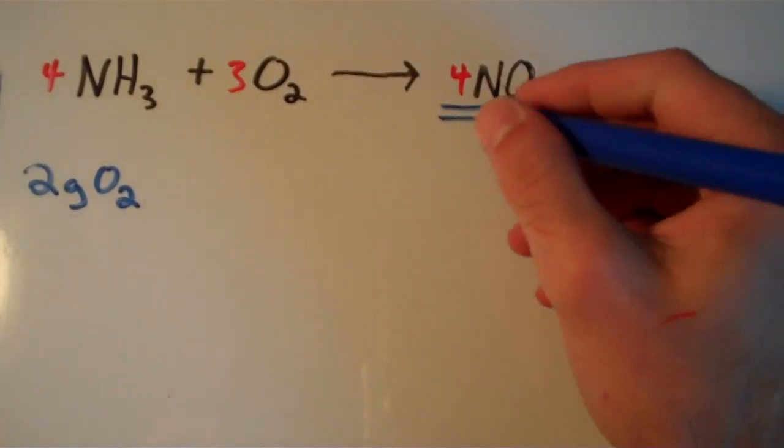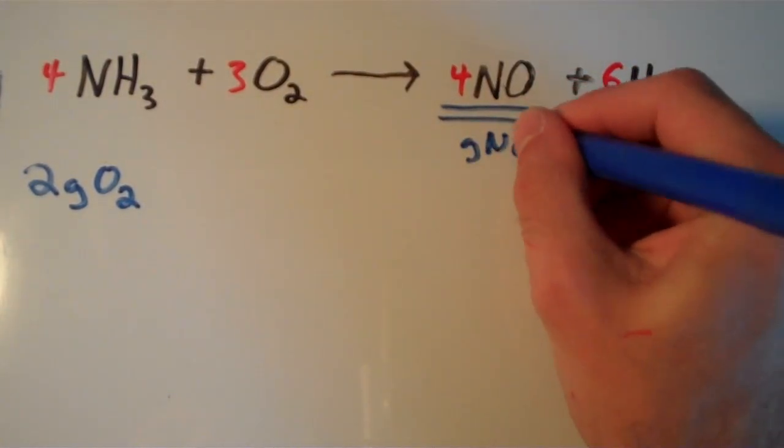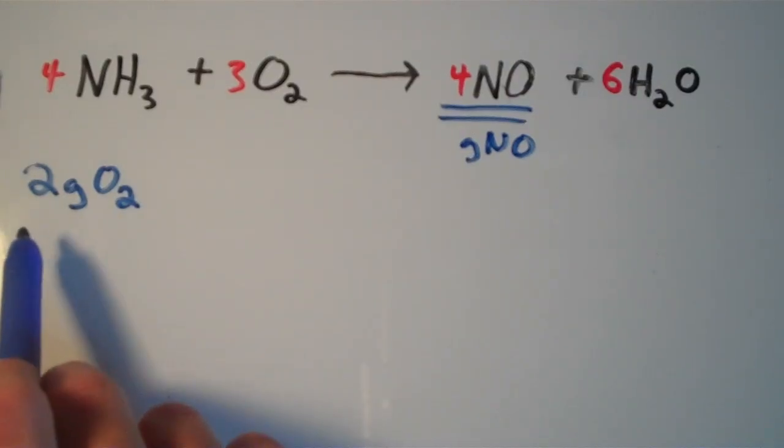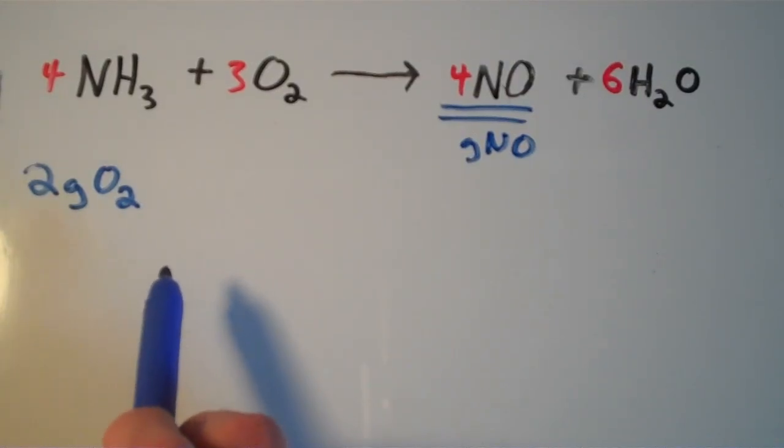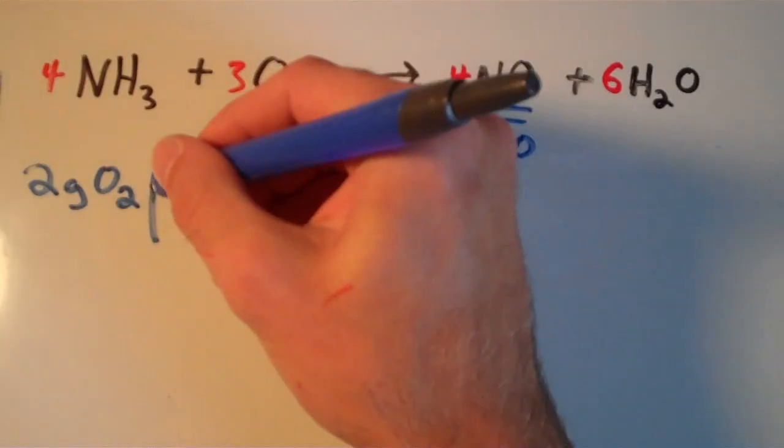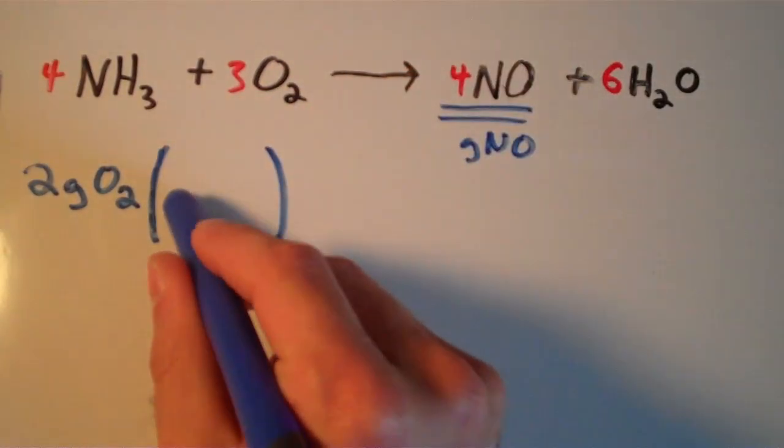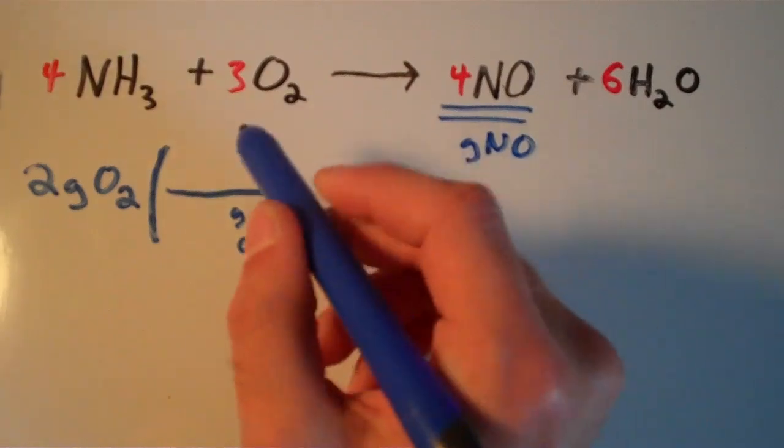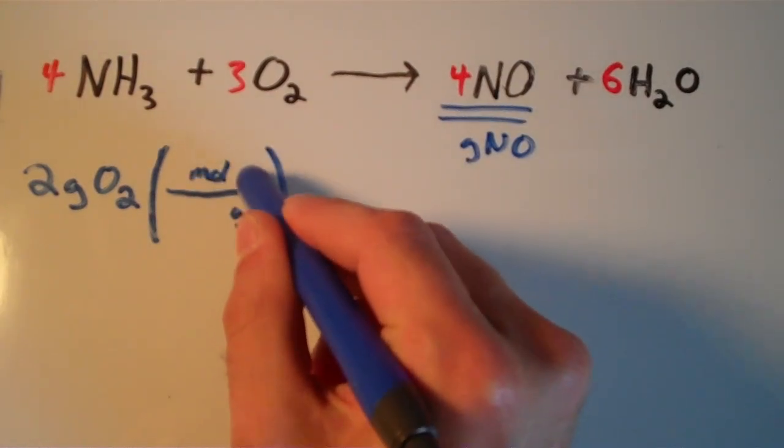We want the grams of NO. What we need to do is convert this mass into moles, then do a mole to mole conversion, and then we can convert away from that. To convert oxygen to moles, we use the mass of oxygen given from the periodic table. On the bottom I'm going to put grams of O2, on the top moles of O2. Remember this is O2, so we have to take two oxygen atoms, and that turns out to be about 32 grams per mole.